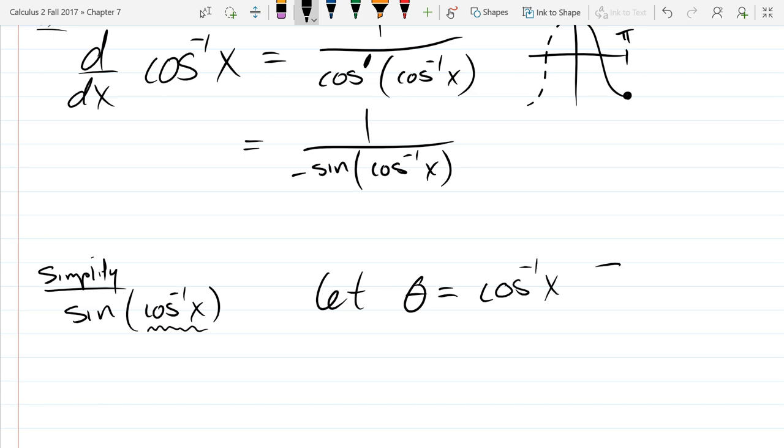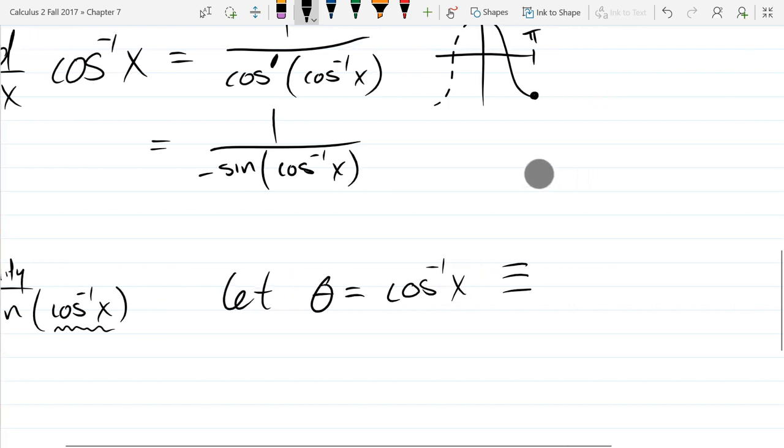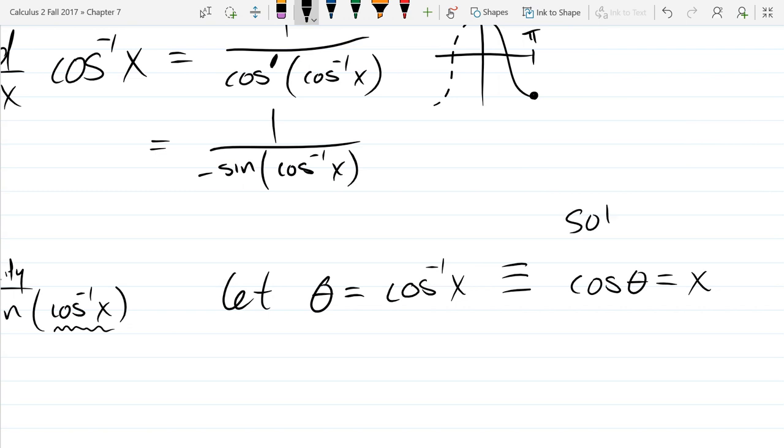Now I'm going to move the cosine function to the other side. So this is the same as cos theta equals x. And we're going to use SOHCAHTOA.